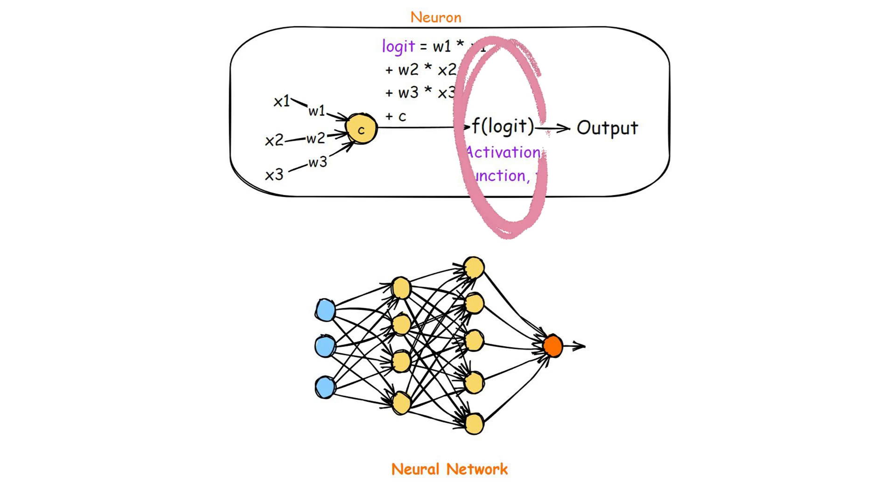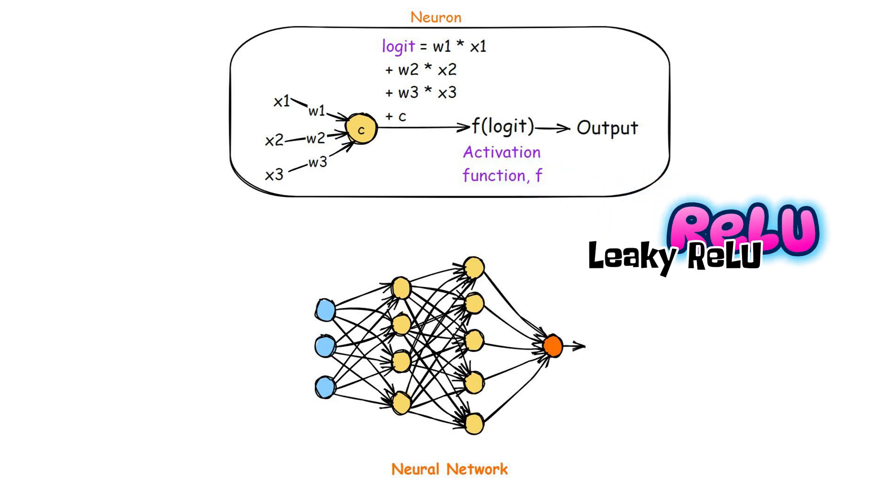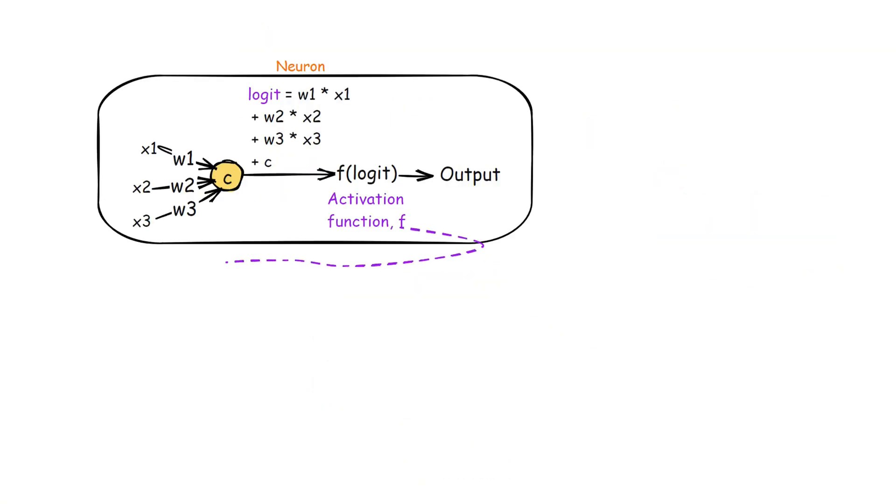There are several commonly used activation functions in neural networks, each with its own strengths and specific applications. In this video, we will investigate the most popular two, ReLU and Leaky ReLU. Let us start with ReLU.